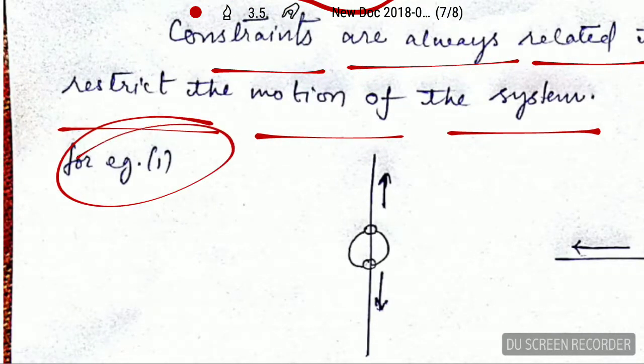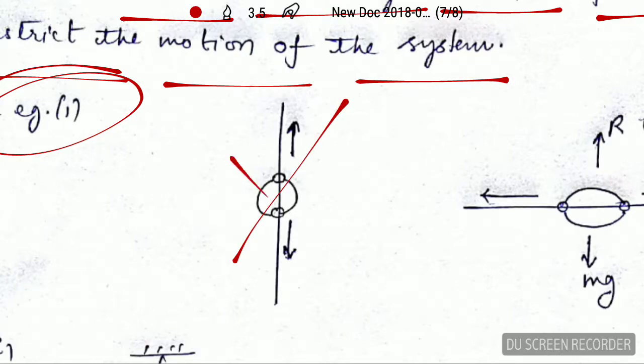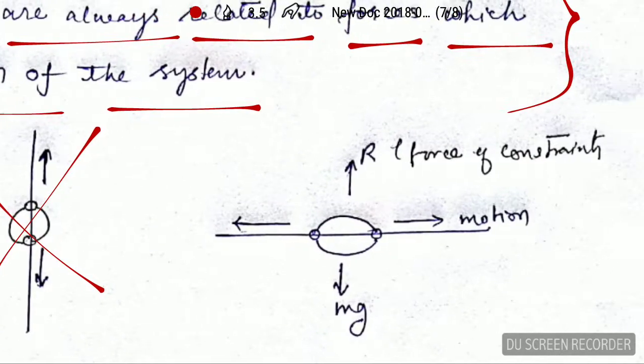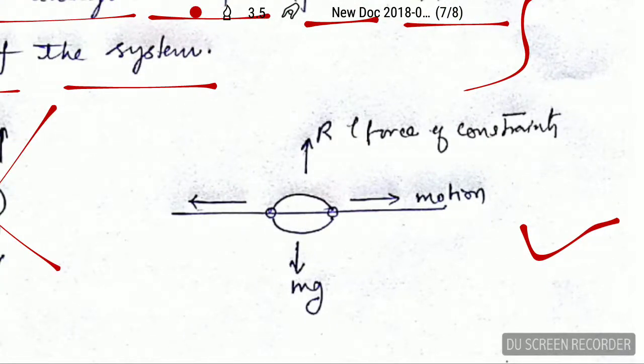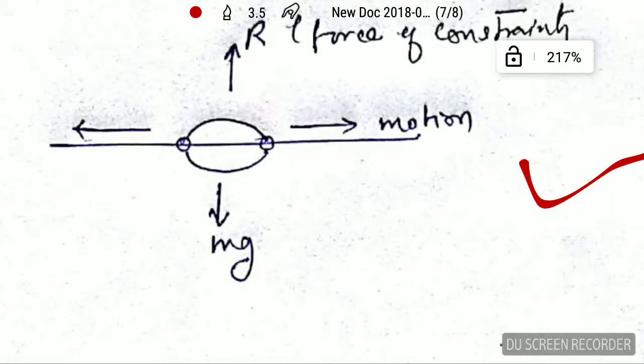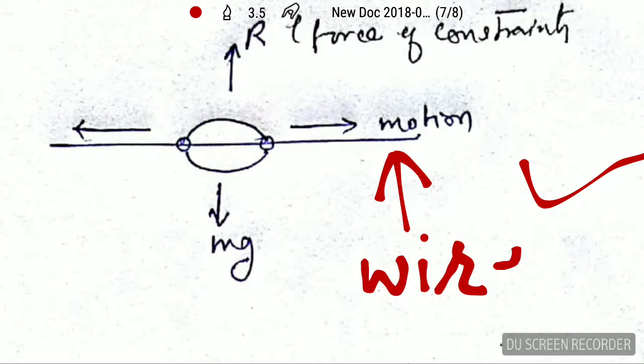Let's go to example one. We will follow this figure. You can see this is the wire, and this is the bead.